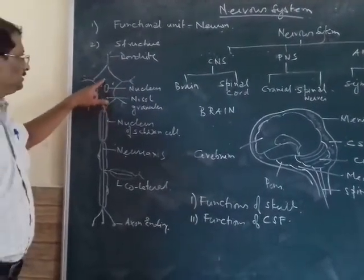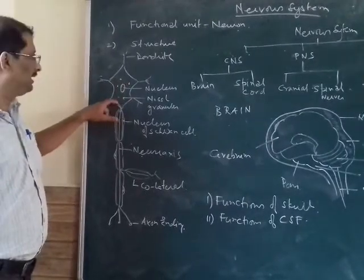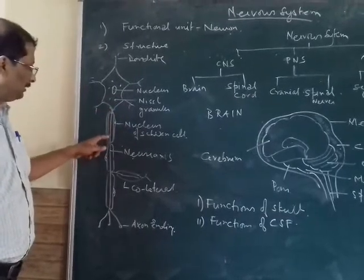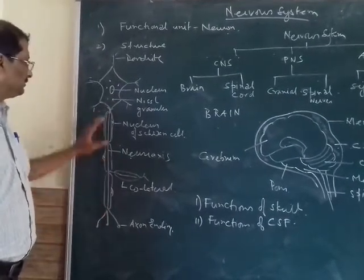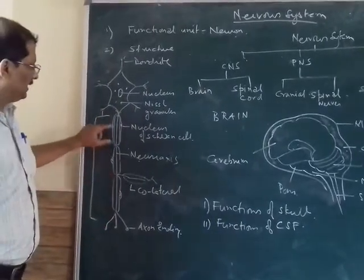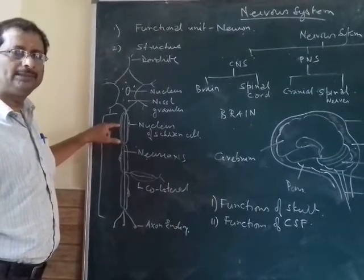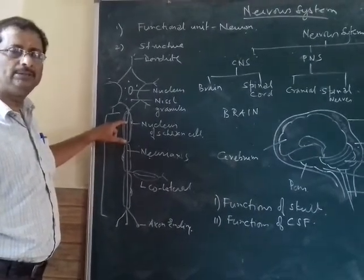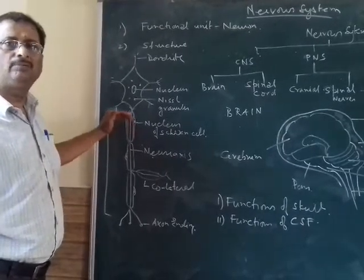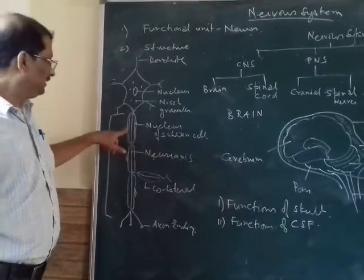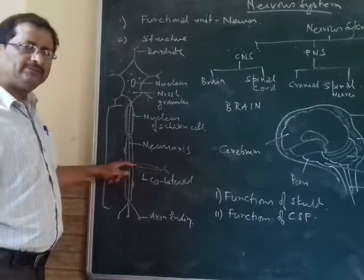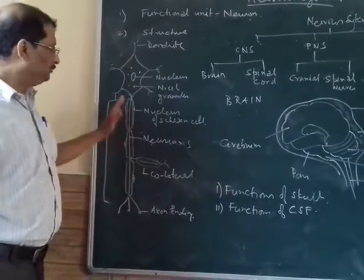Inside this cell body, there is the Nucleus and we have darkly stained granules called the Nissl's Granules. This is called the Axon Hillock, and a part of this is extended. This is called the Axon. In the Axon, you will find the endings are sometimes covered by the Myelin Sheath as well as the Neurilemma. If it is covered by the Myelin Sheath and Neurilemma, you call it a Medullated or Myelinated Nerve Fiber.